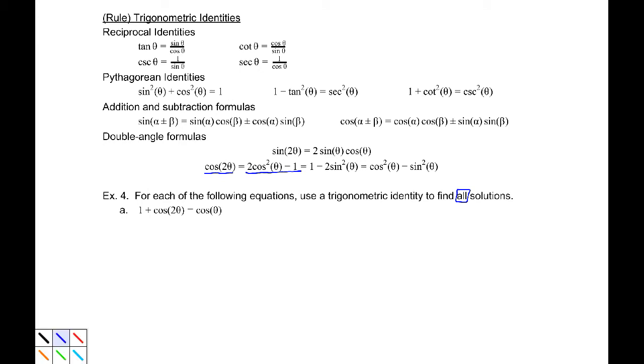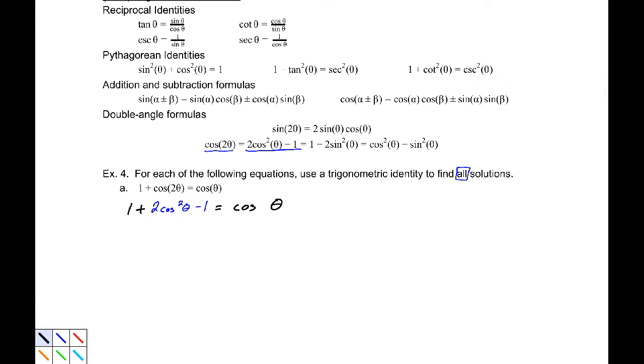So, let's go ahead and replace the cosine 2 theta in that equation with a 2 cosine theta minus 1. Cosine squared theta minus 1. Doing that, we can simplify this to 2 cosine squared theta equals cosine theta.